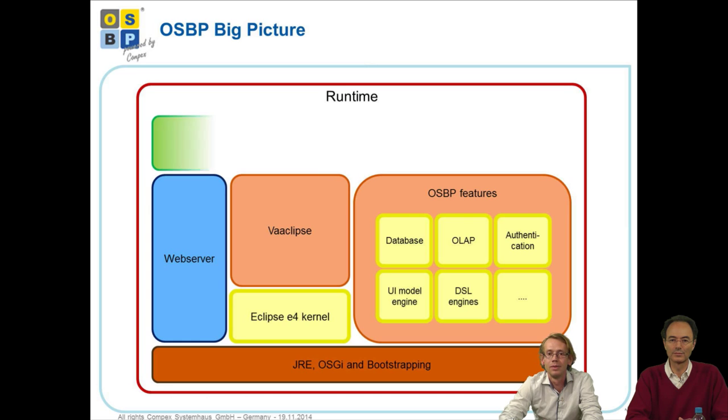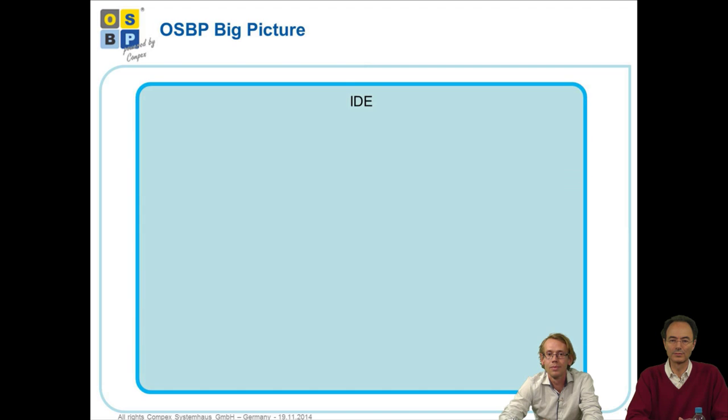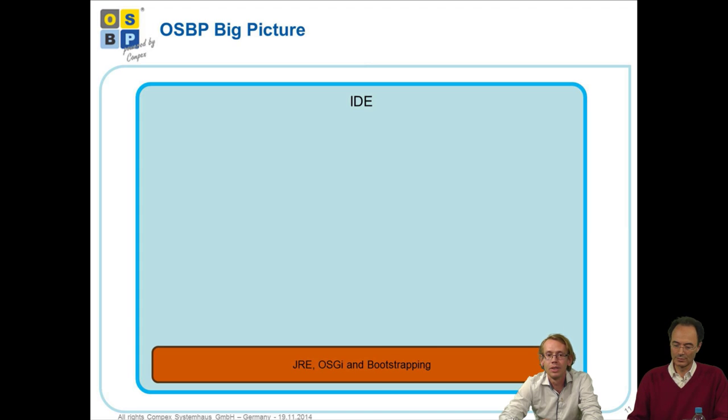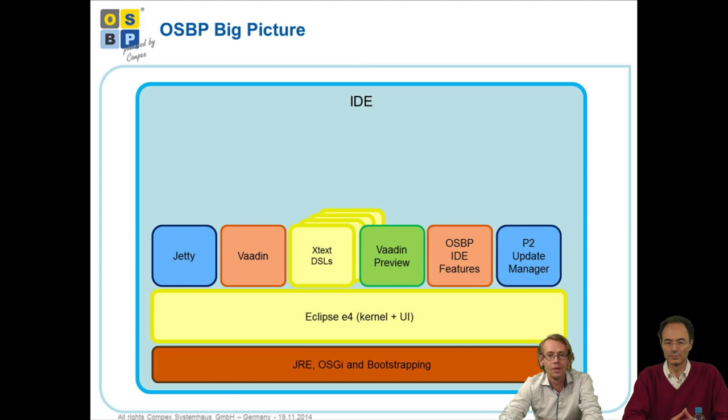The IDE part is your Eclipse, your Eclipse application. And we put in a lot of additional features. We put in all the features required to get a good feeling, a good preview about the application that you are creating, that you are assembling at this time. There is a Jetty web server for Vaadin preview. We have Vaadin integrated to render the models at IDE level. We have several X-text DSLs. Mr. Lutz will talk about it later. And for sure additional IDE features like an X-text index view and so on. So we are pretty good set up with our OSBP IDE.